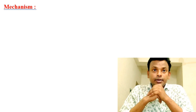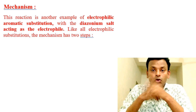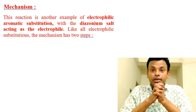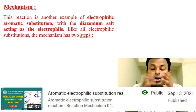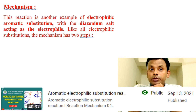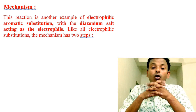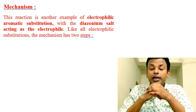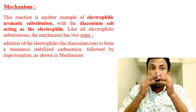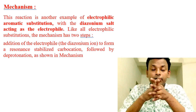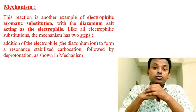Mechanism: the reaction is another example of electrophilic aromatic substitution. We have already discussed aromatic electrophilic substitution reaction. With the diazonium salt acting as an electrophile, like all electrophilic substitutions, the mechanism has two steps: addition of the electrophile, that is the diazonium ion, to form a resonance-stabilized carbocation called the sigma complex, followed by deprotonation as shown in the mechanism.